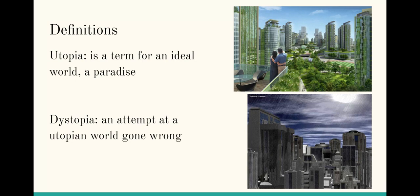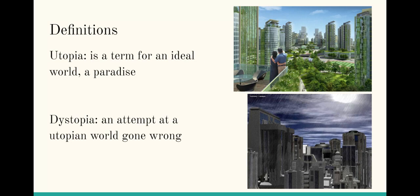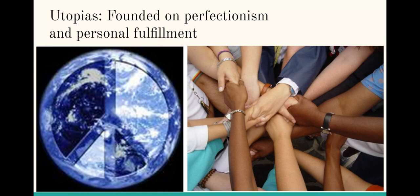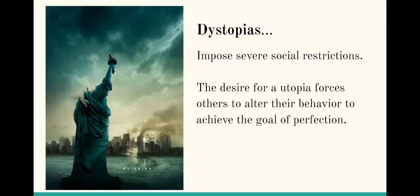Nobody sets out to create a dystopia — nobody would say 'let's start a community where everything is going to be terrible,' because nobody would want to live there. Either it's something out of their control like a natural disaster, or they were attempting a utopia and it just went wrong. Utopias are founded on perfectionism and personal fulfillment — everyone has what they need and can be content — whereas dystopias often impose severe social restrictions, removing many personal freedoms in order to attain other ideals such as equality. In reality, we know it's impossible to have something be truly perfect, so in their attempts to reach that, they lose something.